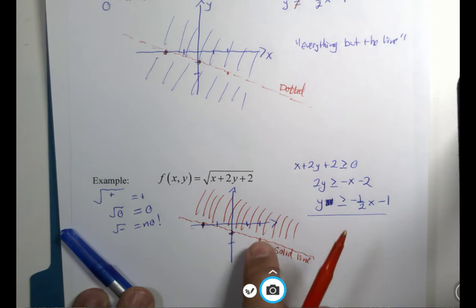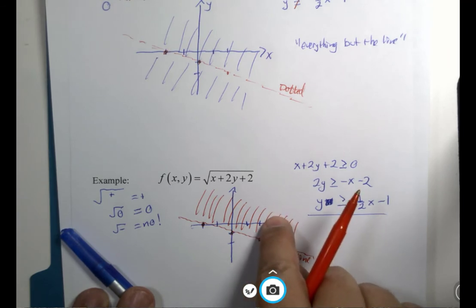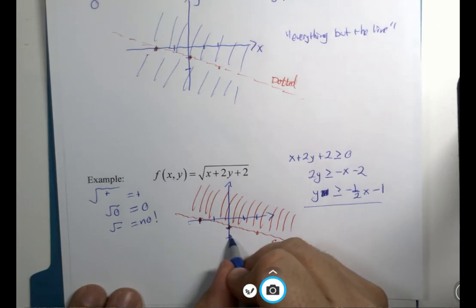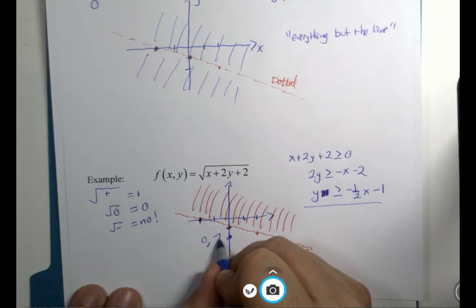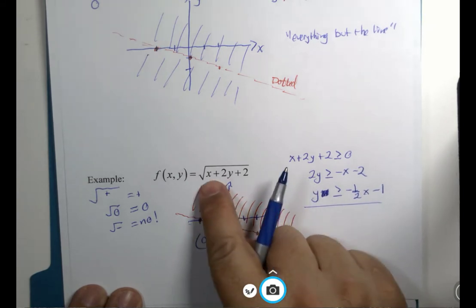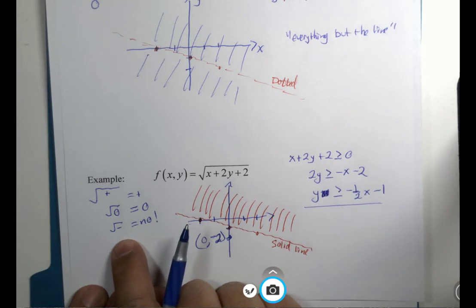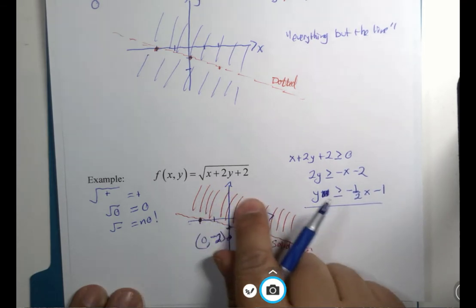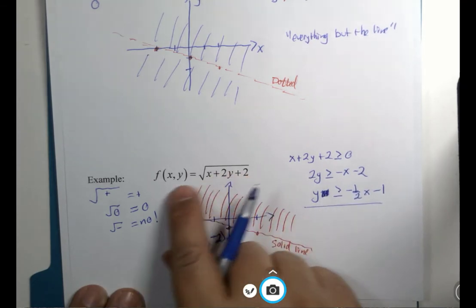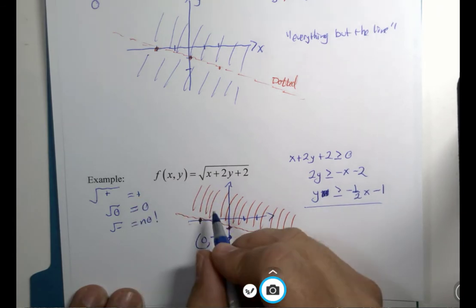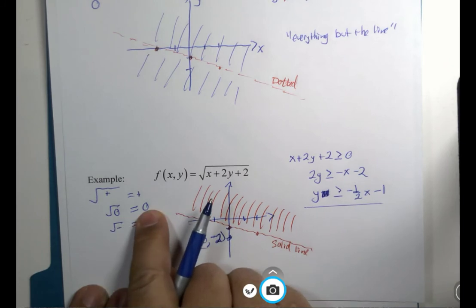The claim is that everything over here is good and everything over here is bad. It wouldn't be difficult to verify the bad. This point, 0, negative 2 is below the line. If x is 0 and y is negative 2, you will have the square root of a negative. And if you choose any point on this side of the line, this will be positive. And if you choose any point on the line, you'll have 0.